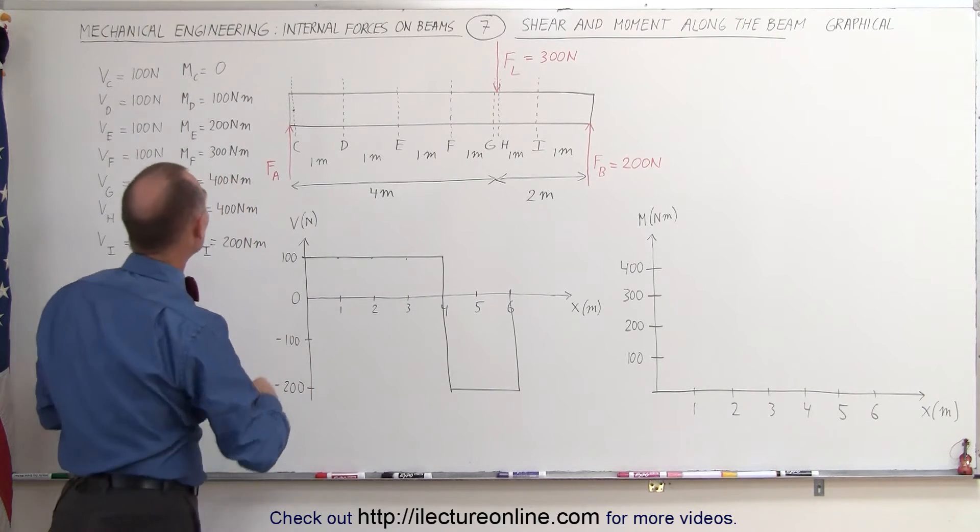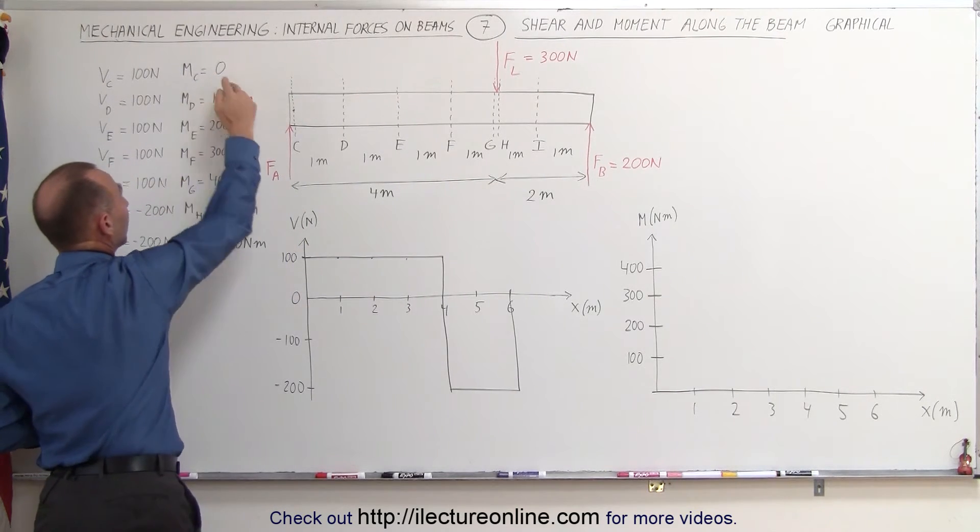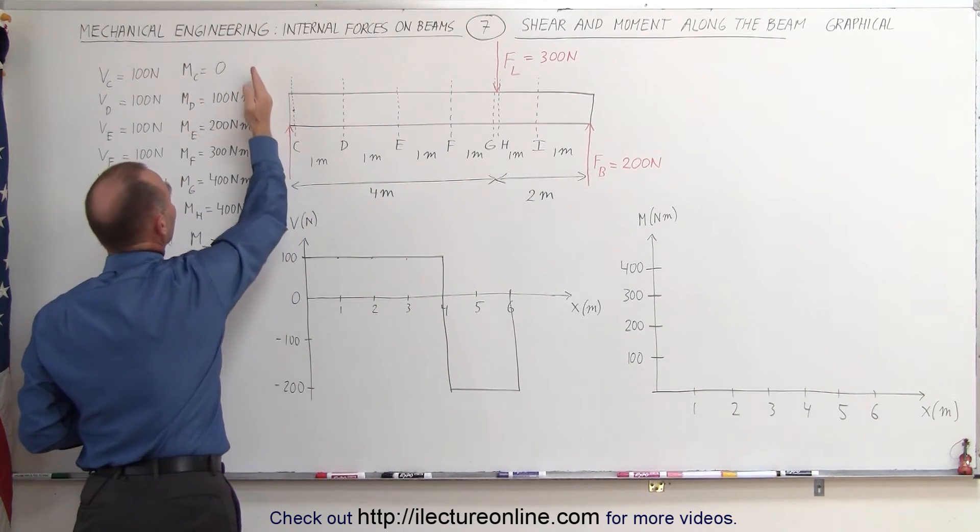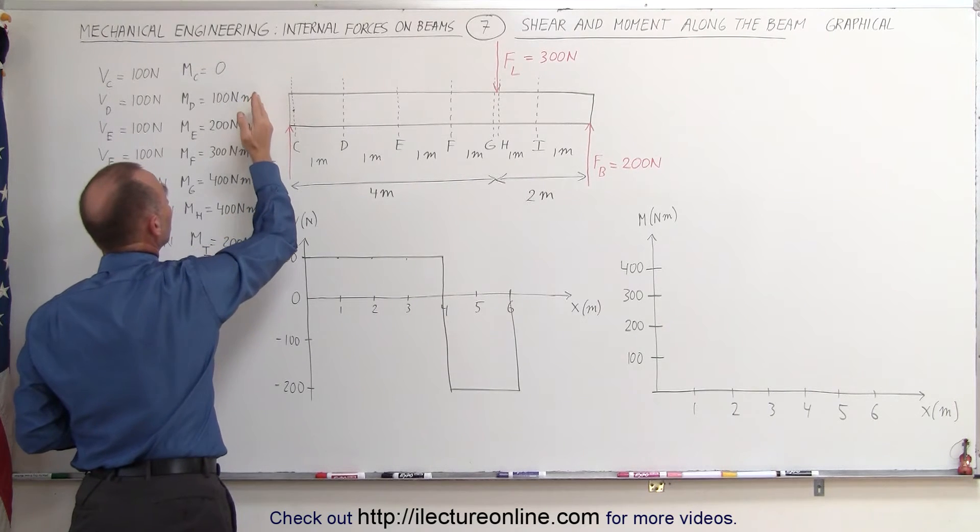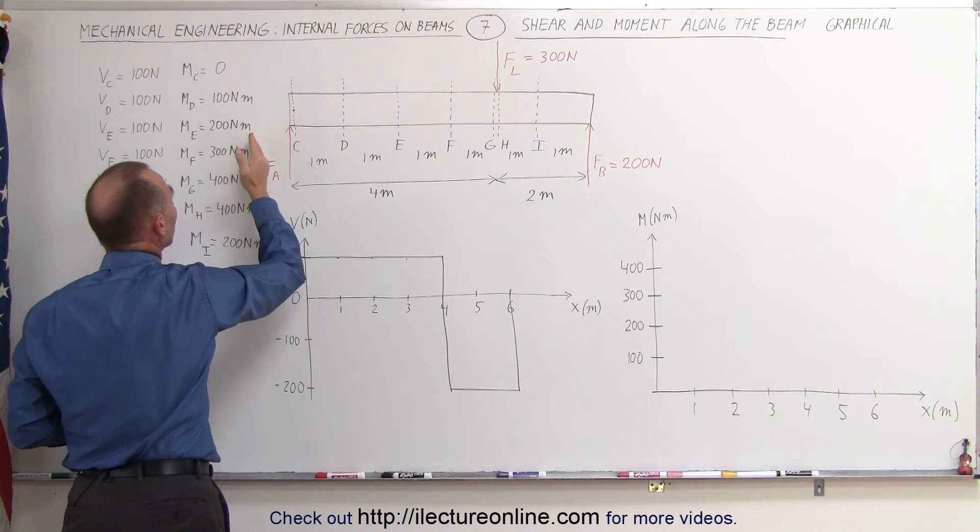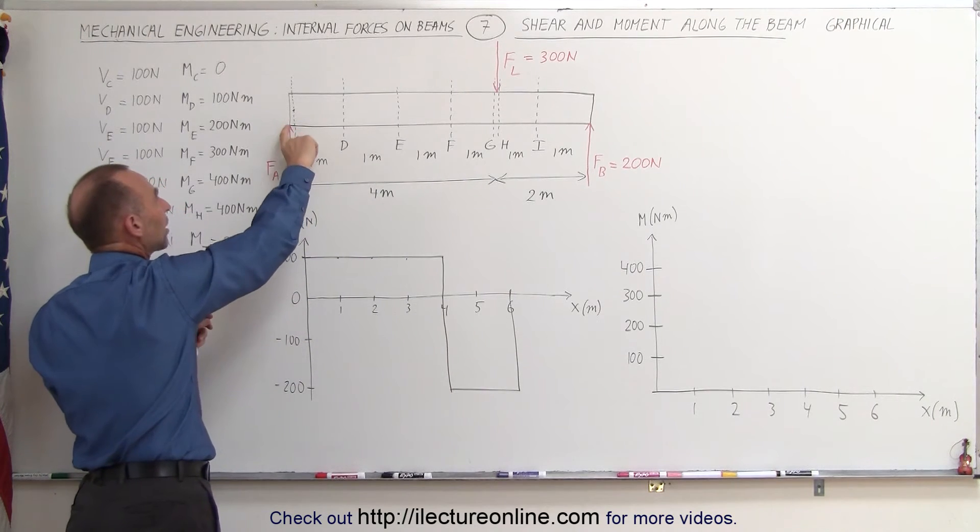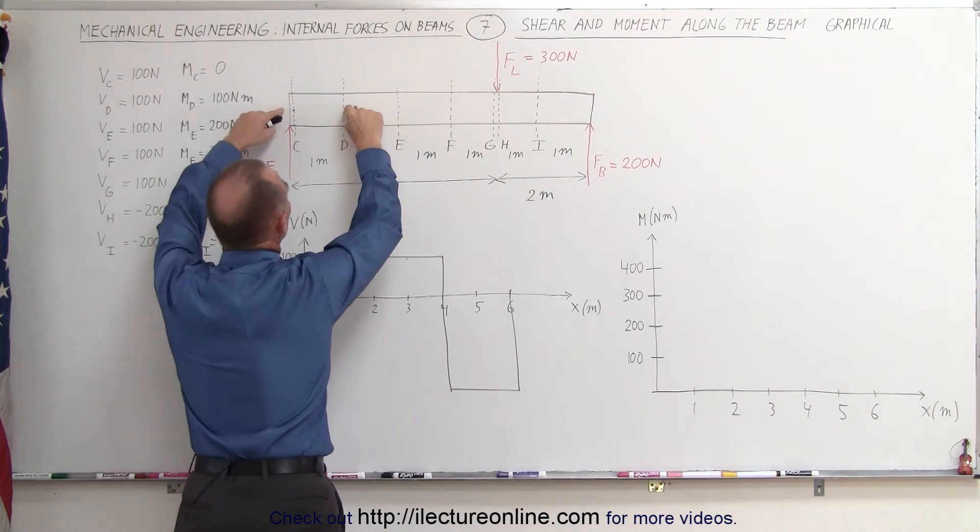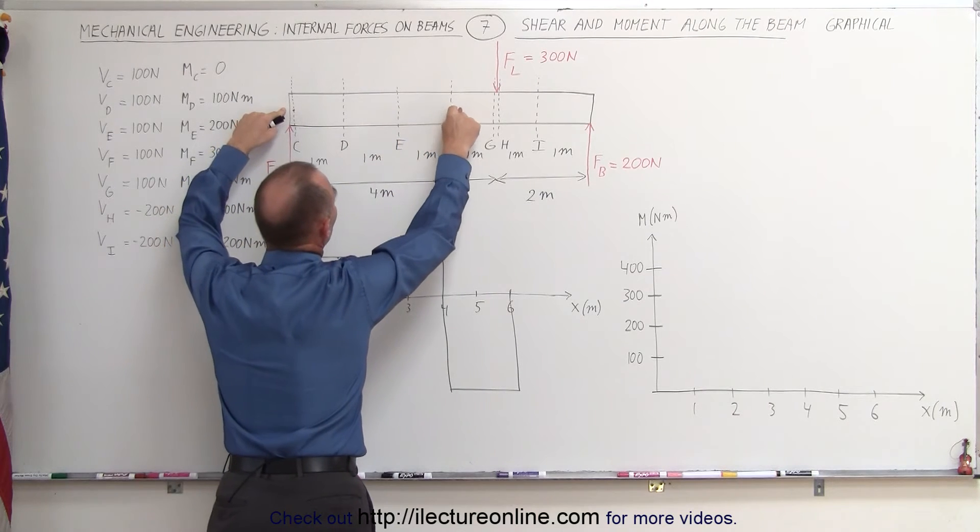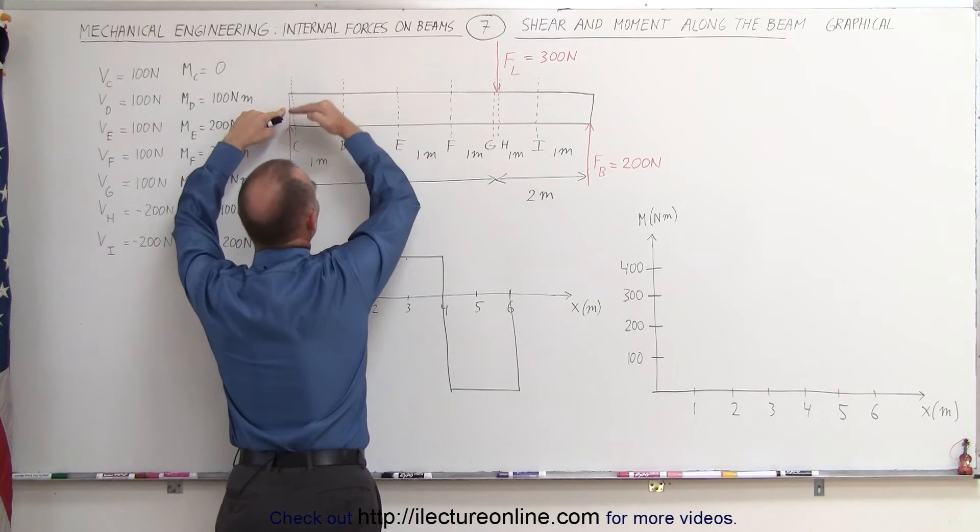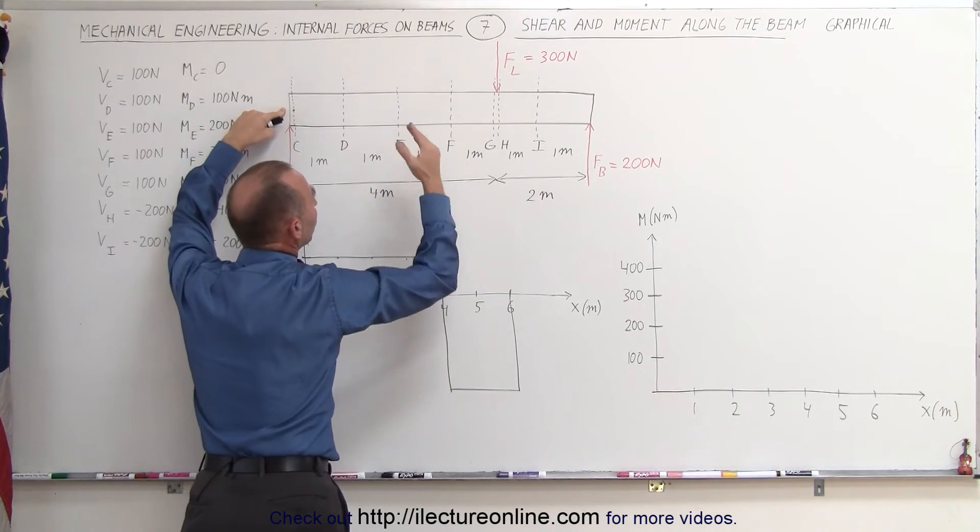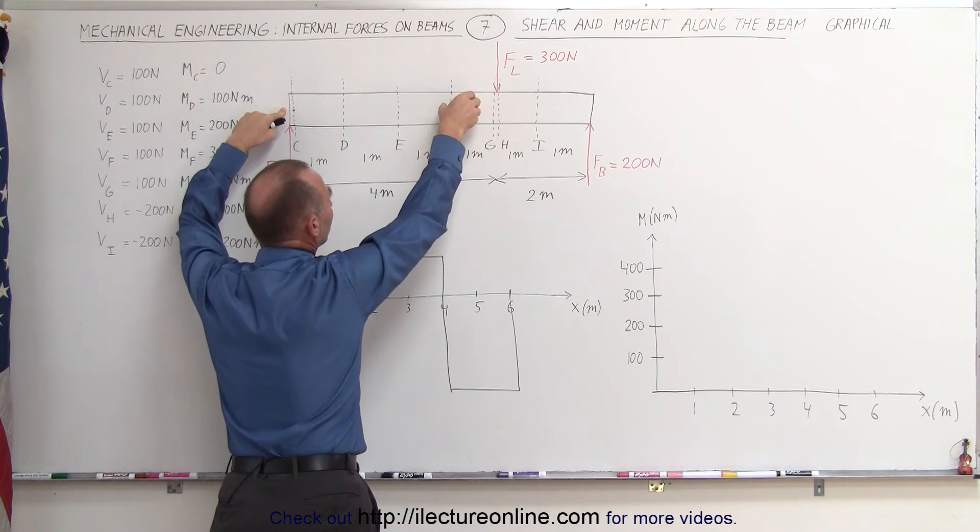Looking at the moments, notice we start at the moment of zero, right at the left edge of the beam. Then it increases to 100 newtons per meter, or 200 newtons per meter, 300 newtons per meter, because each time it's only the reactionary force that causes a moment, but the moment arm gets bigger and bigger. Therefore, you have a greater and greater moment, which requires a greater and greater internal forces creating a counter-moment inside the beam, counteracting that moment caused by the reaction force.